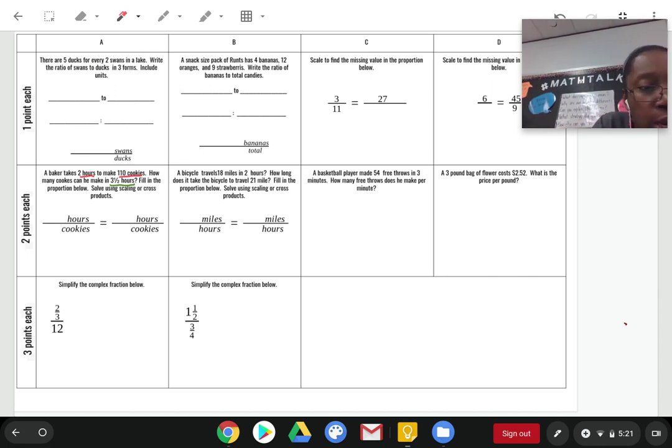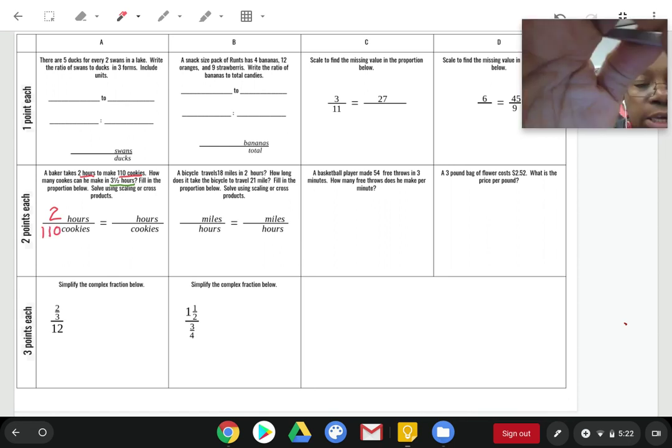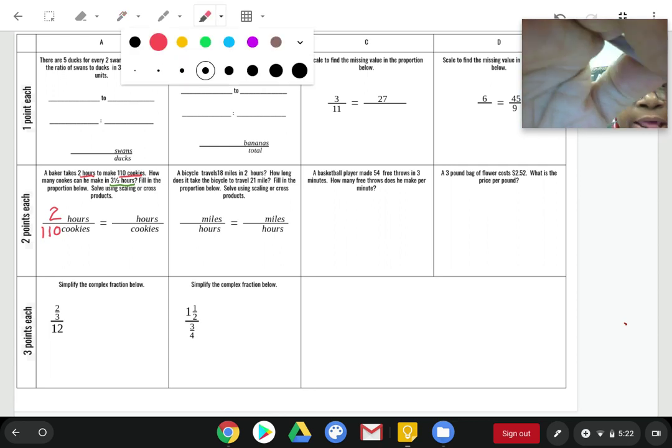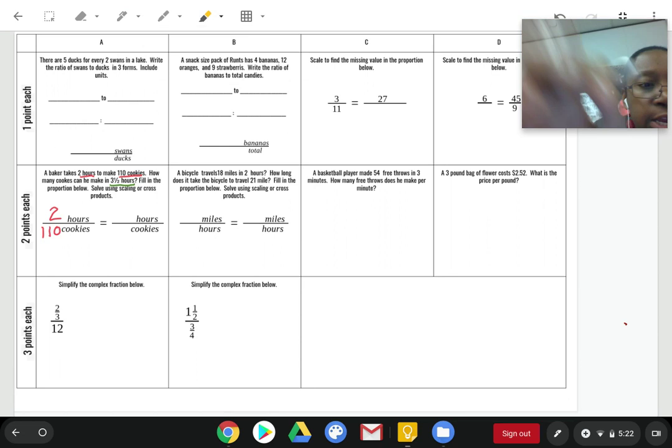So, first of all, we've got to fill in our proportion. So, hours. Notice it told us two hours. So, I'm going to put that up top. And 110 cookies. I'm going to put that on the bottom. Now, I need you to notice that on the right-hand side, I've lined up my units. Notice that hours is lined up with hours.